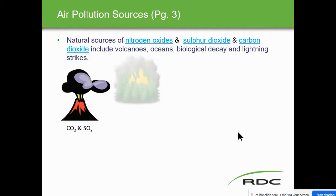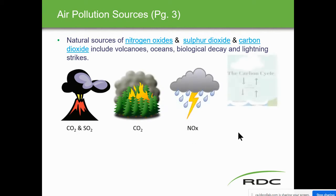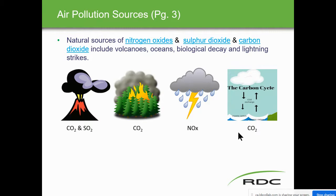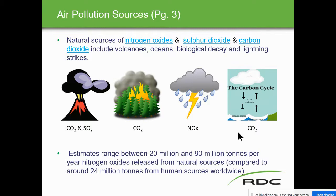Volcanoes produce carbon dioxide and sulfur dioxide. Forest fires produce carbon dioxide. Lightning strikes produce NOx. And of course, CO2 from the carbon cycle in the ocean and the exchange of decaying matter. The estimate range is between 20 million and 90 million tons per year of nitrogen oxide released from natural sources, compared to around 24 million tons from human sources worldwide. The numbers are in your ILM — they may have changed by now, but you get the gist.